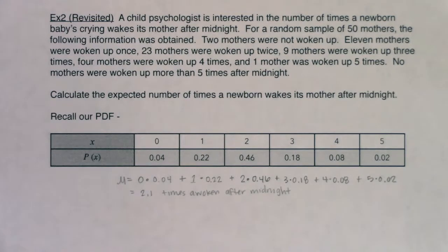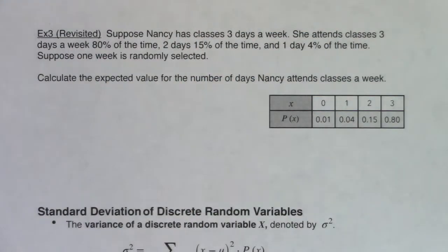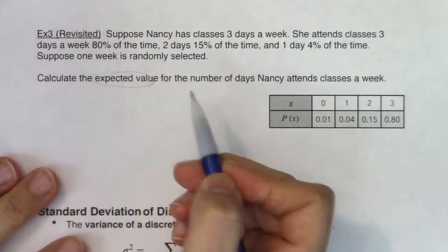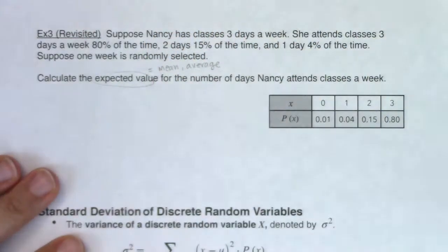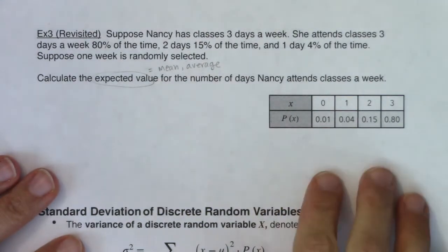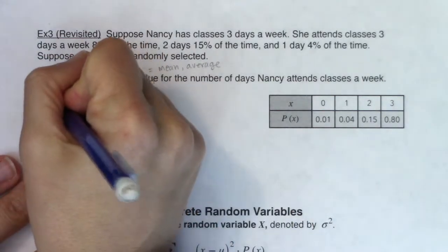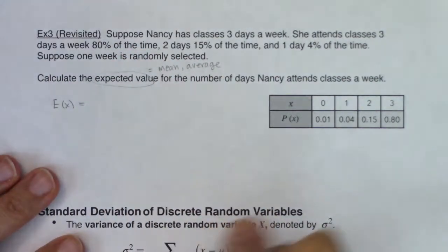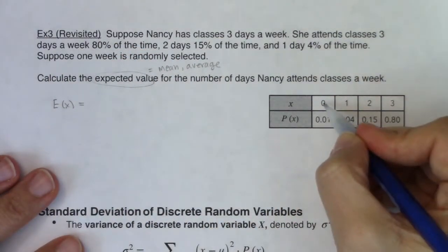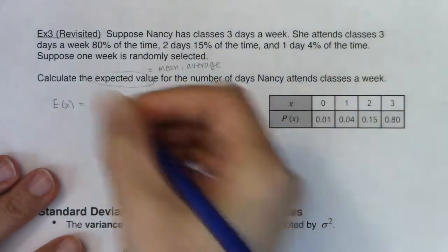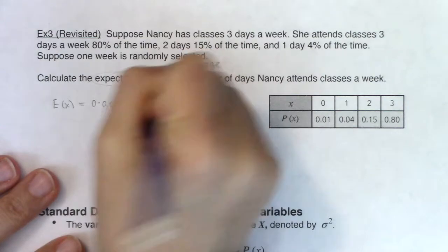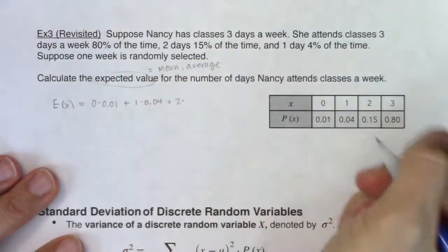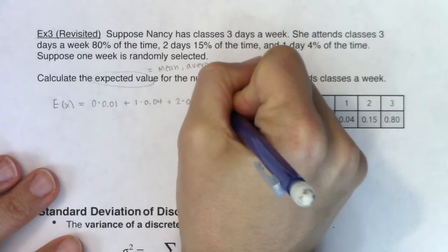Let's go revisit Nancy, the student that was going to class a few times a week. We're getting asked to calculate the expected value - that's another word for mean, which is another word for average. I'm going to do this one by hand first. If I want the expected value E(x), it's a bunch of products that I need to add together. This is 0 times 0.01, plus 1 times 0.04, plus 2 times 0.15, plus 3 times 0.80.